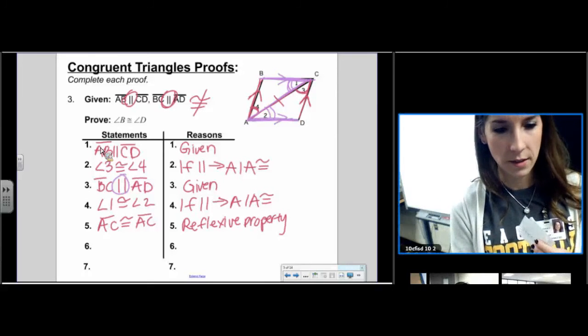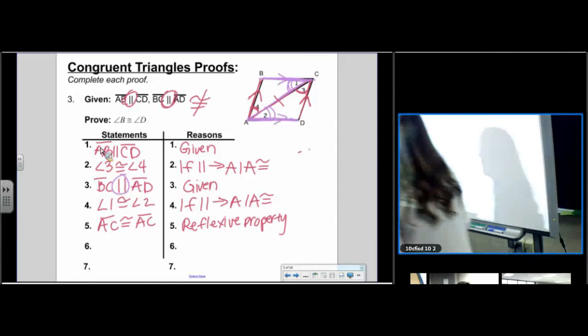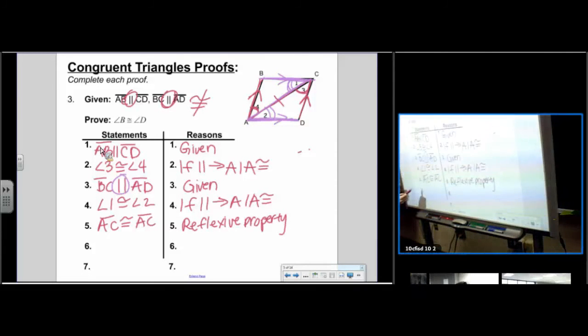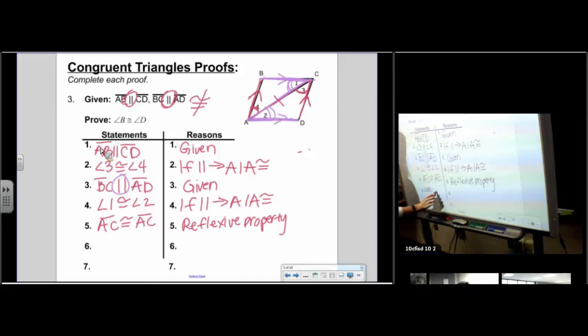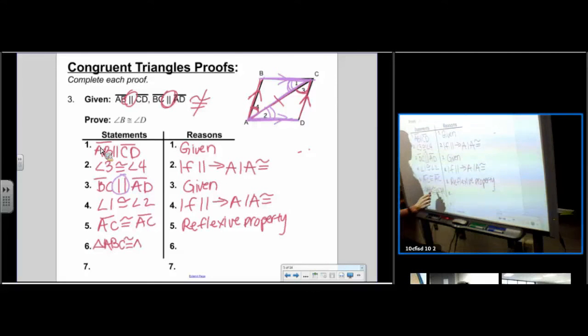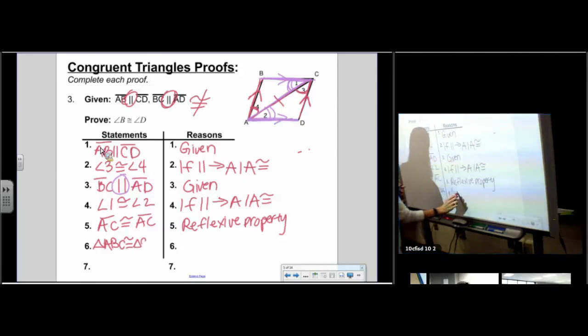Araceli. Do you know number 6? So, Araceli said that our triangles are congruent. Triangle ABC is congruent to triangle CDA by angle, side, angle. Very good.